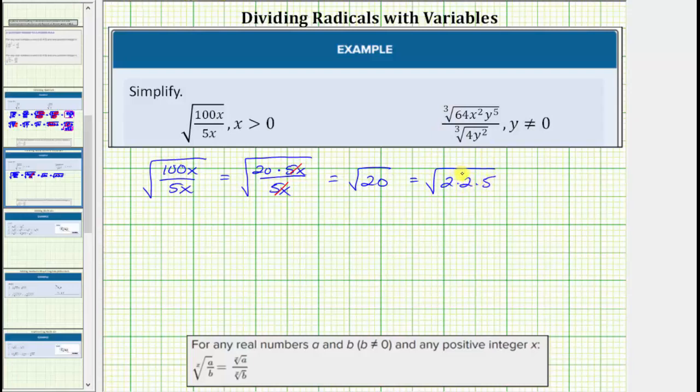Notice here we have two factors of 2, which shows 20 contains the perfect square factor of 2 squared or 4. Before simplifying, let's write 2 times 2 as 2 squared.